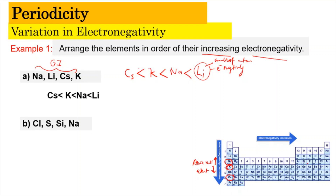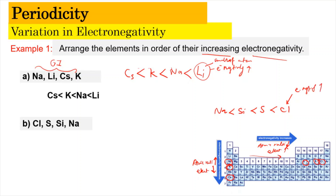For part B, we have Cl, sulfur, silicon, and sodium — all across a period. Crossing the period, atomic radii get smaller, and as atomic radii decrease, electronegativity gets higher. So the highest electronegativity is chlorine, followed by sulfur, followed by silicon, and lastly sodium. Chlorine has the highest electronegativity and the smallest atomic radii. So the answer in order of increasing electronegativity is: sodium, silicon, sulfur, and chlorine.